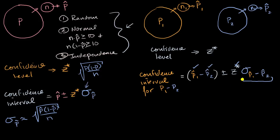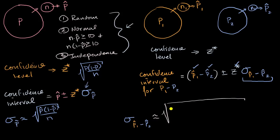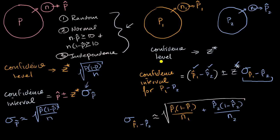The formula for the standard deviation of the sampling distribution of the difference between sample proportions is approximately equal to the square root of: p-hat one times one minus p-hat one over n1, plus p-hat two times one minus p-hat two over n2. Once you plug that in, you've constructed your confidence interval. If your confidence level is 90%, that means 90% of the time you go through this exercise, your interval would overlap with the true difference between the population proportions.